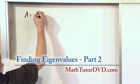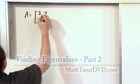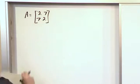What if your matrix A was 2, 7, 7, 2, very simple 2 by 2 matrix and you want to find the eigenvalues of this matrix.